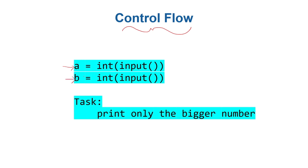So `a` is some number the user supplies when the code runs, and `b` is some number the user supplies when the code runs. You don't know the values of `a` and `b` in advance — they are populated at runtime. Your task is to print whichever value is bigger: if `a` is bigger than `b`, print `a`; if `b` is bigger than `a`, print `b`.